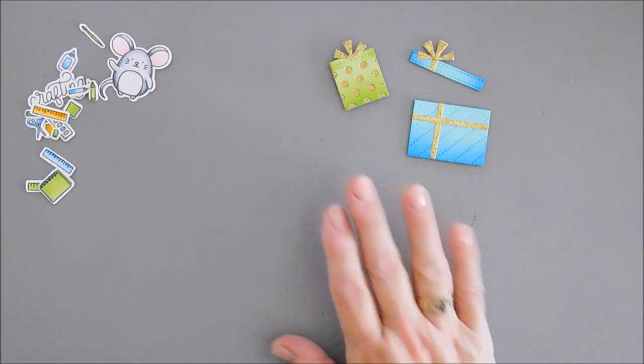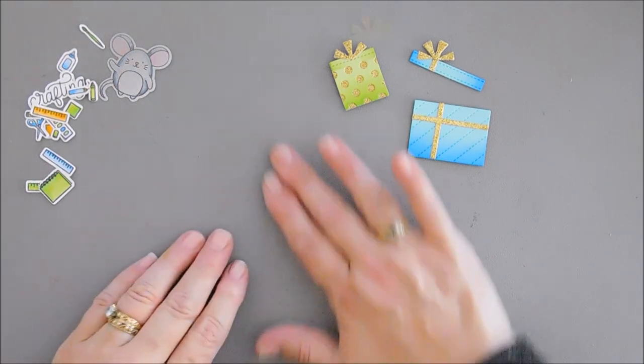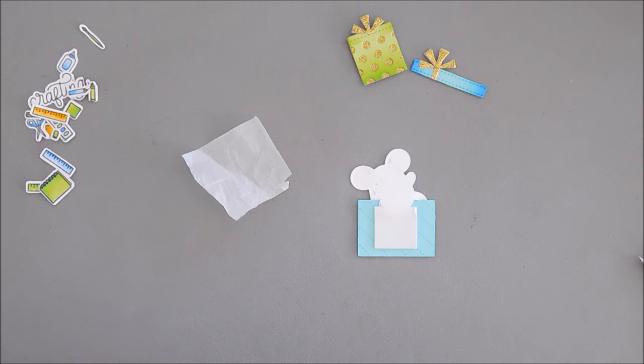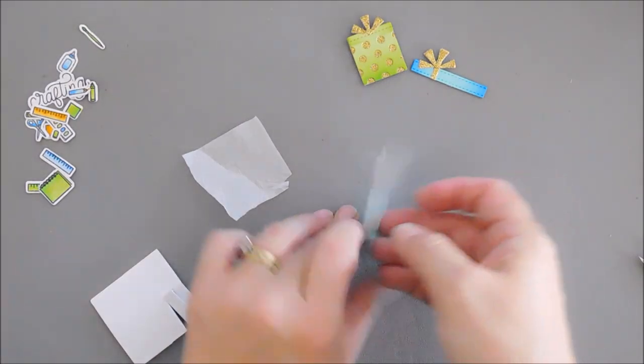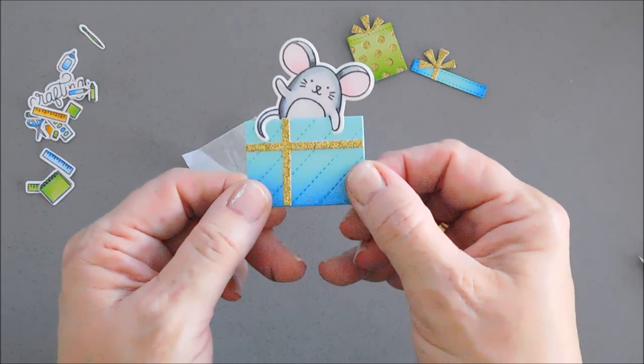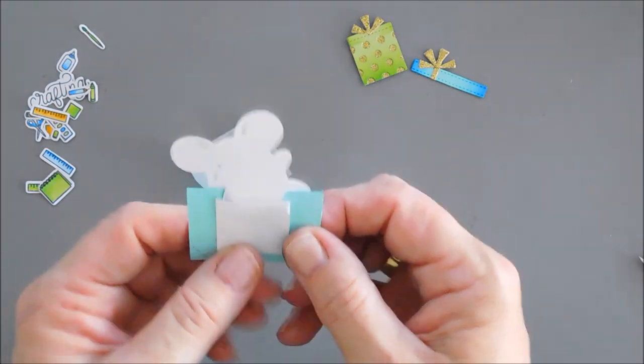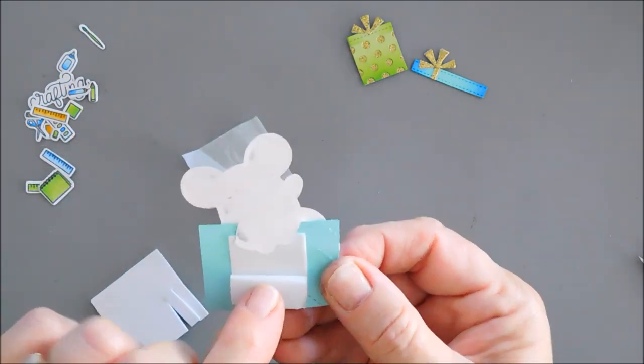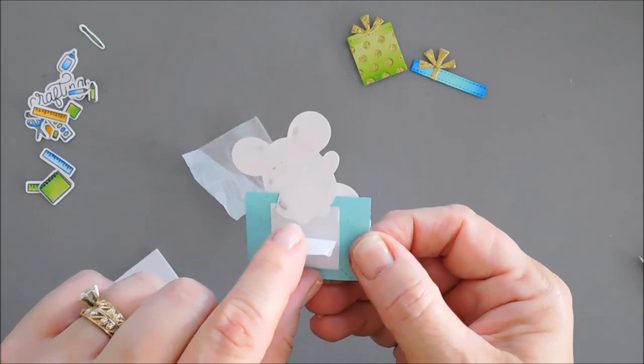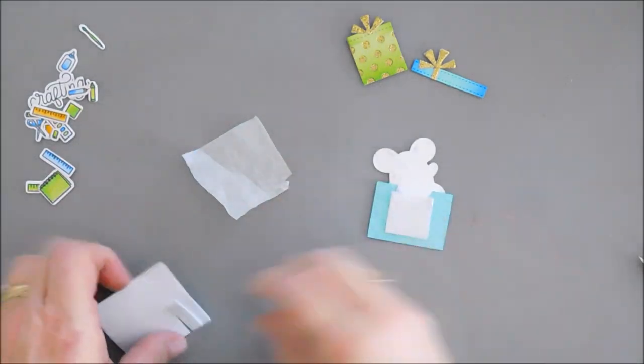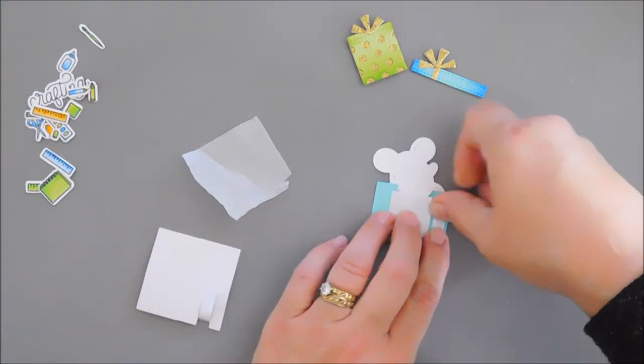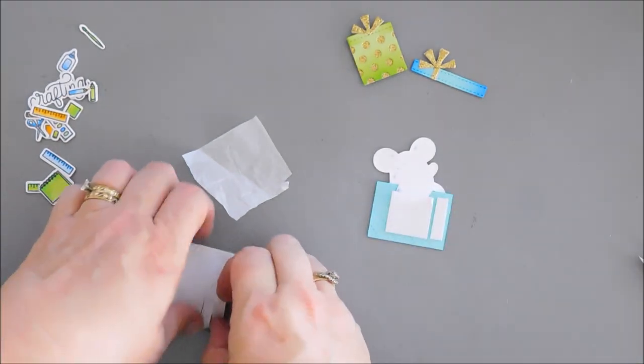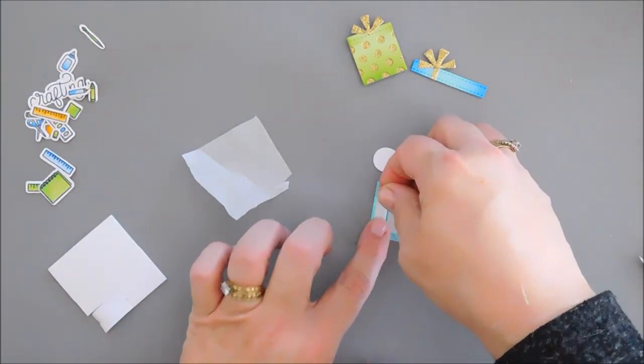Now, we need to work on our background. Today, I'm keeping it quite simple. I went ahead and adhered my little mouse. You can see he's there. What I did was I had already put foam adhesive, but I just tacked him down on top of the foam adhesive. So, it's very easy to do. And then I want to add some tissue paper behind my present. I think that's just going to be adorable.